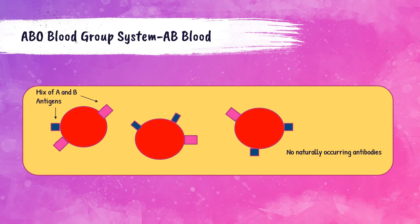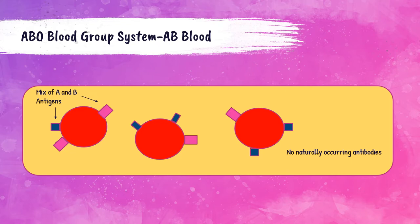This is a drawing of what group AB blood looks like. An AB blood type person has both A and B antigens on their red blood cells, depicted as pink and blue squares, and has no naturally occurring antibodies in their serum. Because of this, they can receive any blood type donation — A, B, AB, or O. There are no anti-A or anti-B antibodies to react, and O blood has no antigens. So AB patients can receive any red blood cell.